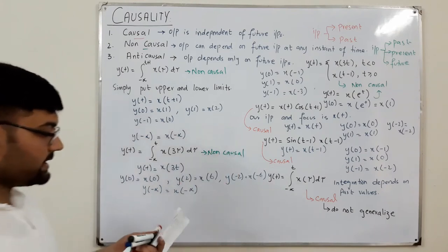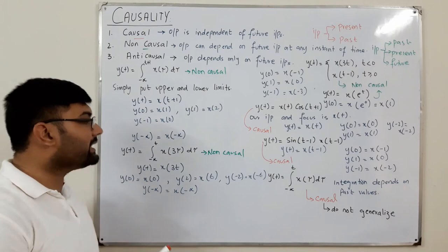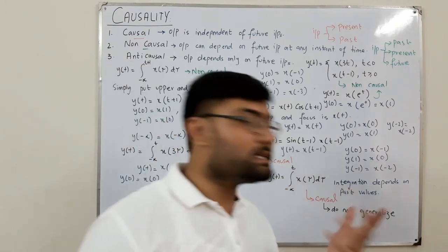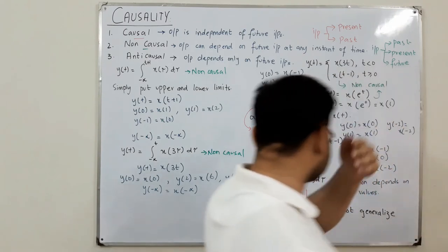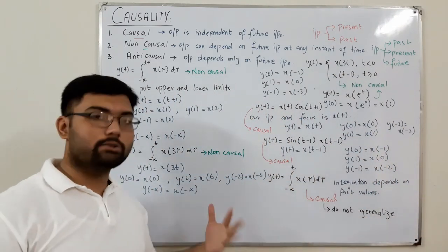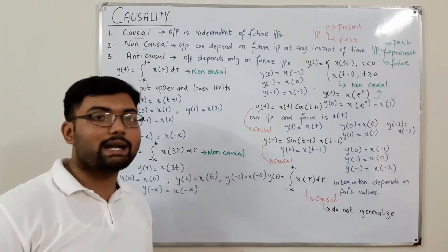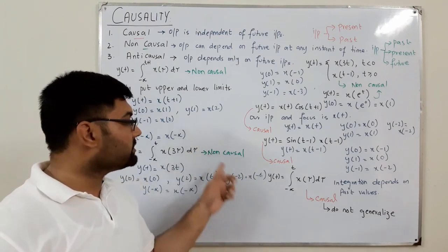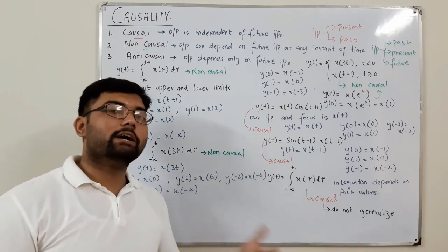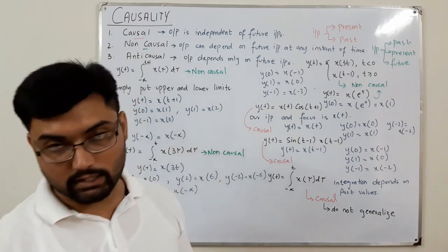For integration problems: in a detailed answer, write that we cannot generalize it. In objective/MCQ format, prefer the option 'cannot generalize' or 'both causal and non-causal.' If only 'causal' is given, choose causal.